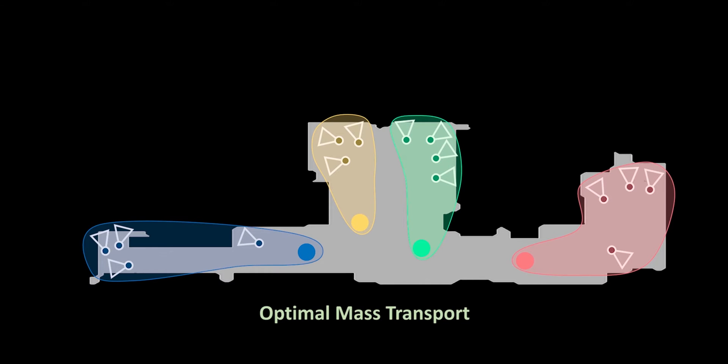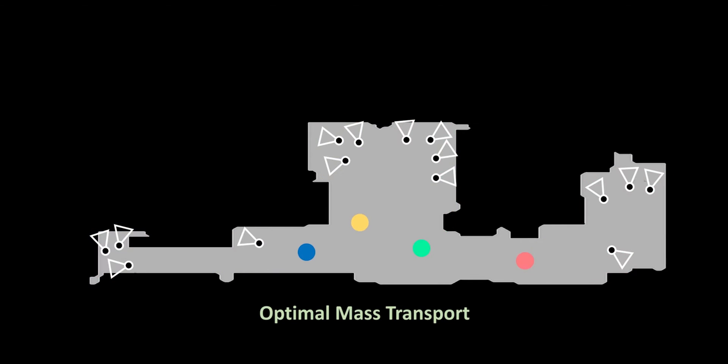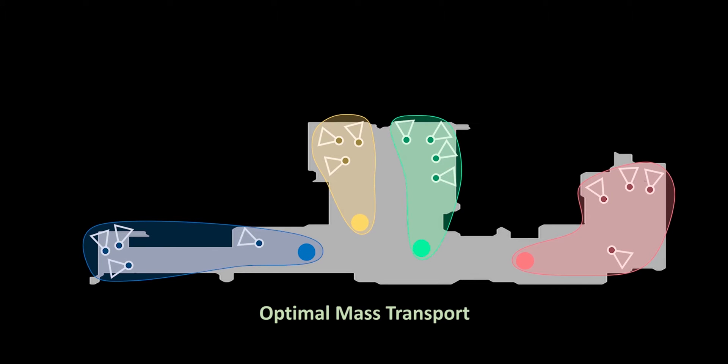The optimal mass transport partitions the overall scanning tasks into groups so that each robot can focus on its own set of tasks.